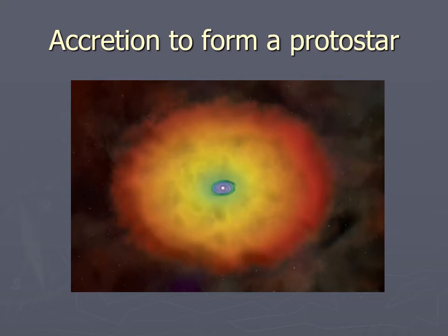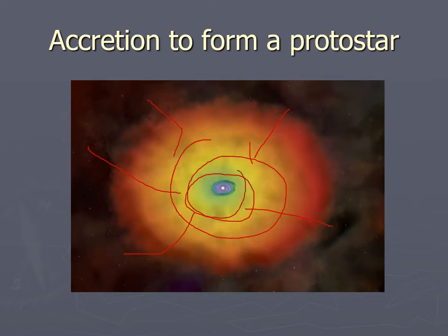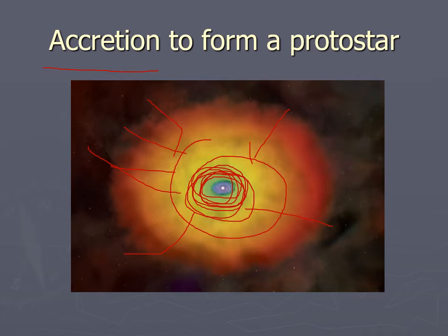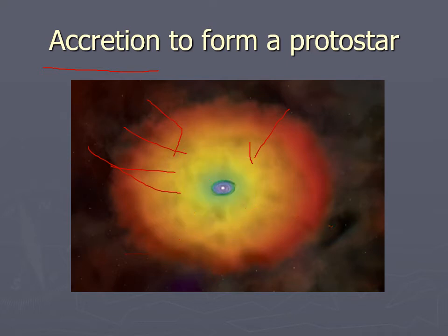The gas is spiraling in, but it doesn't go straight in because any slight distortion sends it off to the side. In physics, conservation of angular momentum means that as it comes in, it goes faster and faster. This falling inward is called accretion, and as it spirals inward, centrifugal force causes it to flatten out into a disk — what we call an accretion disk — as it spirals into the protostar.